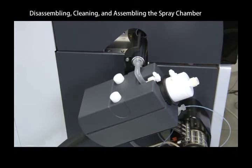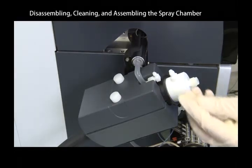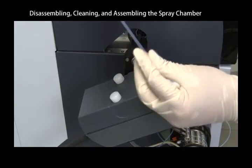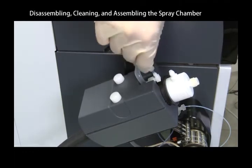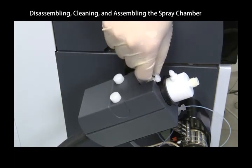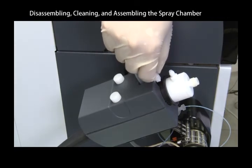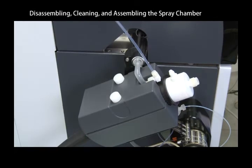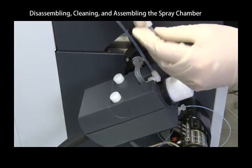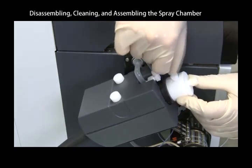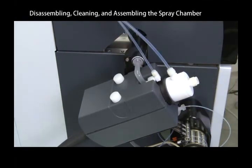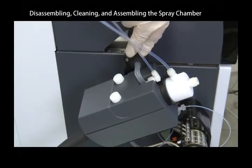Make sure the make-up gas connector on the end cap is perpendicular. Connect the dilution gas tubing. Install the clamp between the spray chamber and the connector tube.